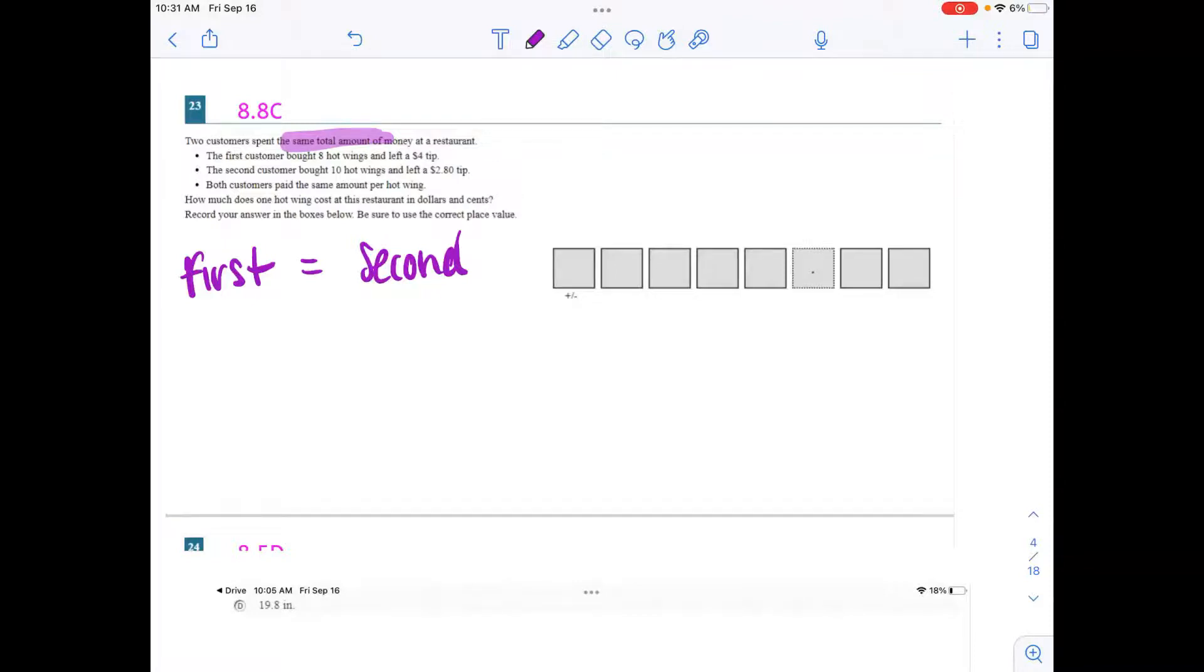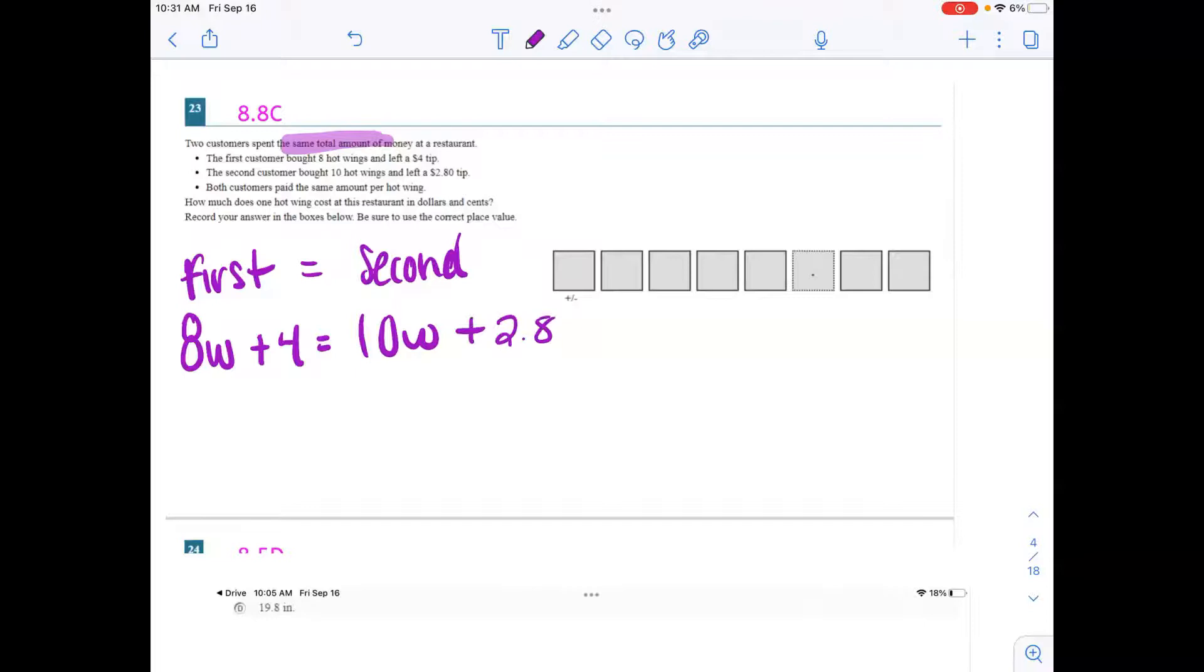So let's talk about the first customer. They bought 8 hot wings. So I would do 8W for wings and they left a $4 tip that is added to how much they paid. 8 wings, and then in addition, they have to add the 4 to the tip. And then 10W for the 10 wings for the second customer, and then a $2.80 tip. From here, we would have our students go into Desmos and plug this in. I'm going to continue working this out by hand. But they can plug this into Desmos to check their answer and back up their work.